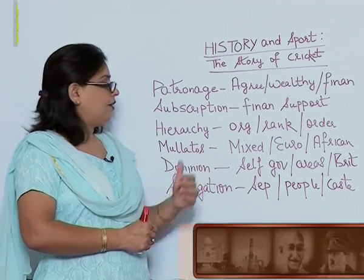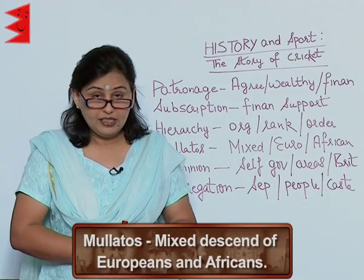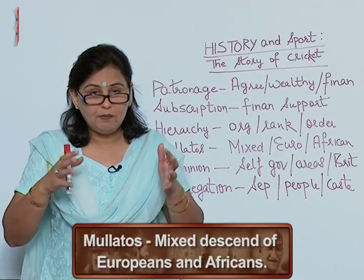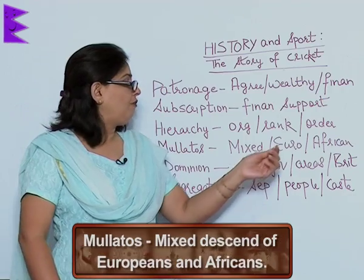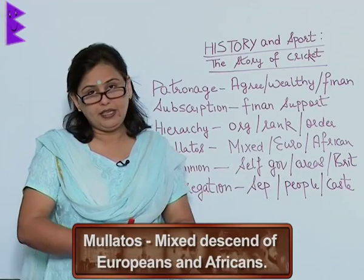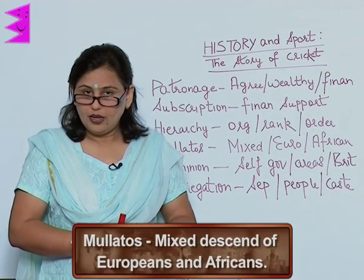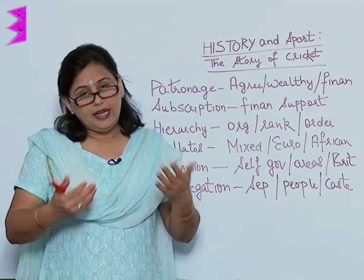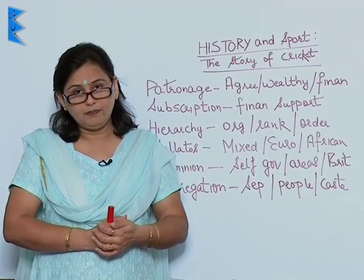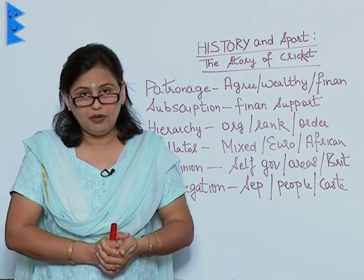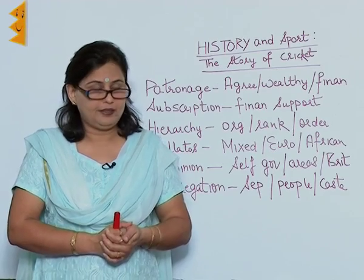Next is Molitus. Molitus is in fact the mixed descent of Europeans and the Africans. They are the result of colonialism and the migration of people from one place to another.